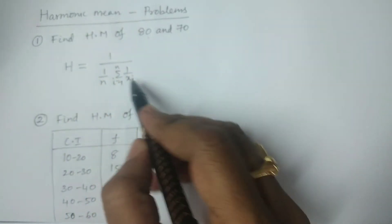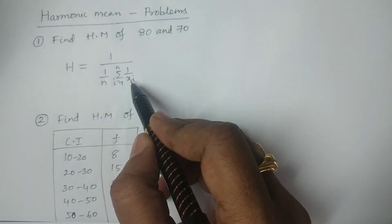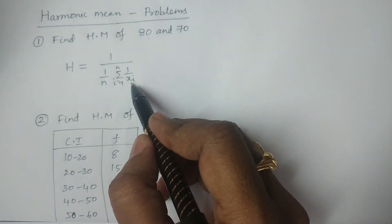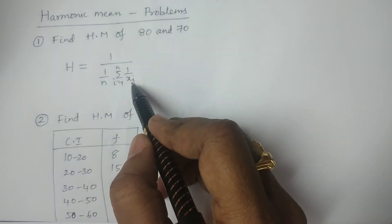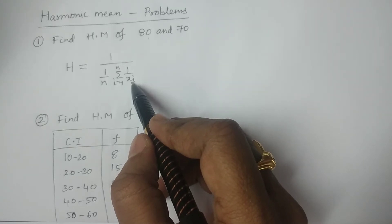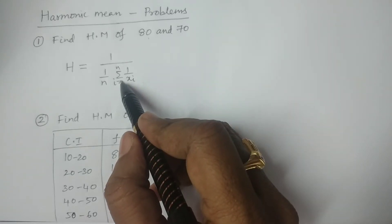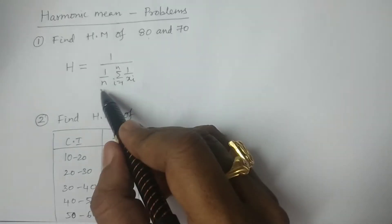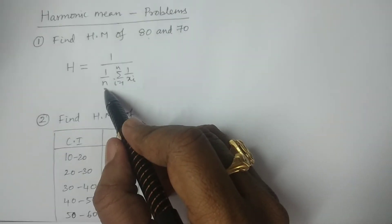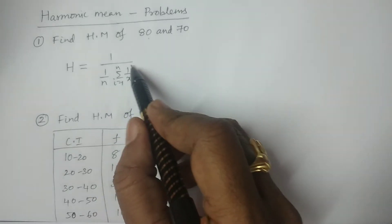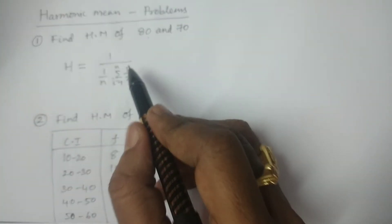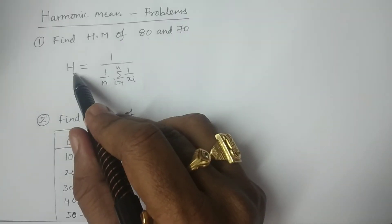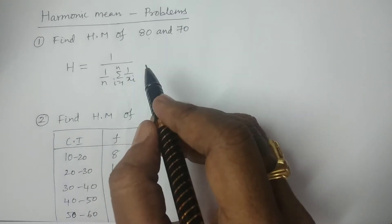The term 1/xi represents reciprocals of x1, x2, ..., xn. The summation divided by n gives the arithmetic mean of reciprocals, and then you calculate the reciprocal of that — this is the arithmetic mean of reciprocals, which gives H, the harmonic mean.